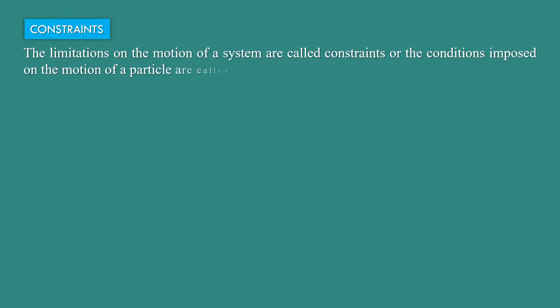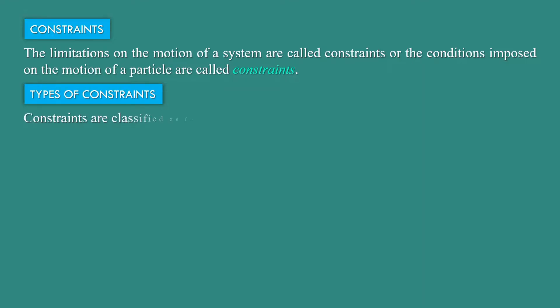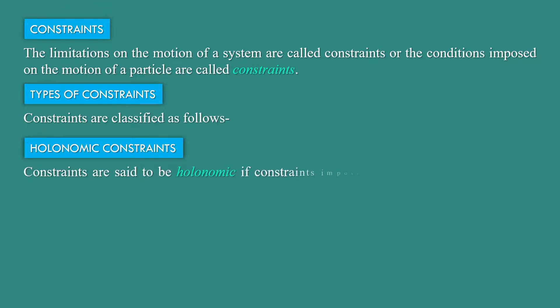Constraints are the limitations on the motion of a system, or the conditions imposed on the motion of a particle. Types of constraints: constraints are classified as follows. First, holonomic constraints — constraints are said to be holonomic if the constraints imposed on the motion of the system can be expressed in the form of a mathematical equation.